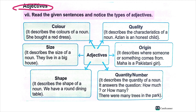Here are some examples. Adjective types: the types of adjective include adjective of color, quality, origin, quantity, number, and shape.